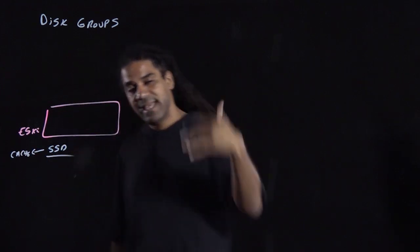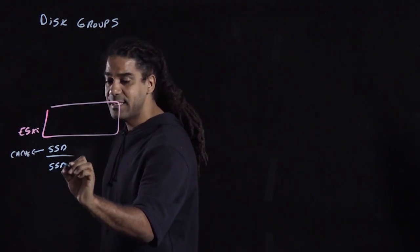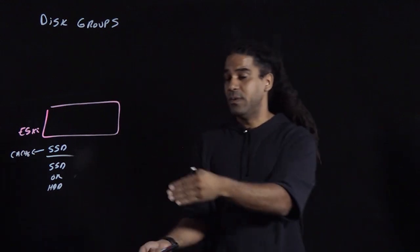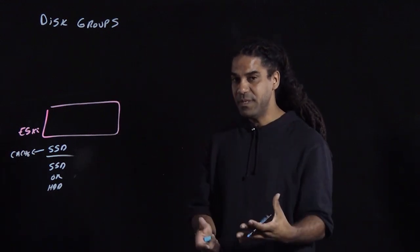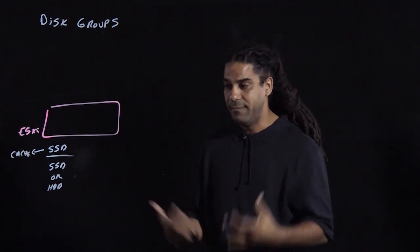Then in the second level, which is the capacity tier, you can have either SSDs or hard drives. You could use either one of them, but for performance reasons, you probably want to go with the SSDs. That will give you the best performance you can get.